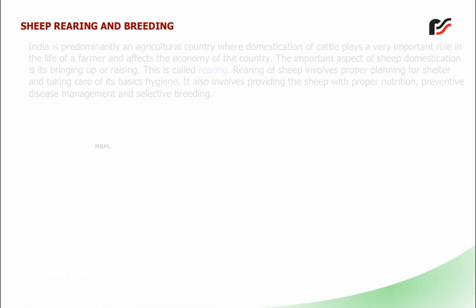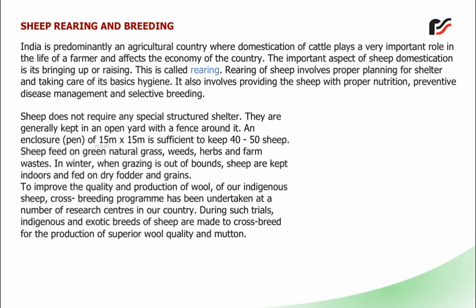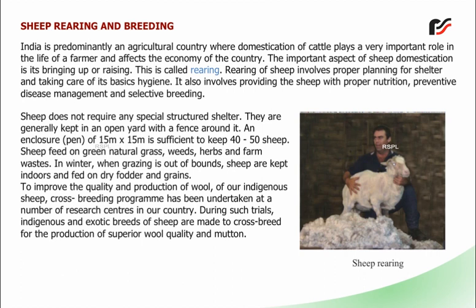India is predominantly an agricultural country where domestication of cattle plays a very important role in the life of a farmer and affects the economy of the country. The important aspect of sheep domestication is its bringing up or raising, which is called rearing. Rearing of sheep involves proper planning for shelter and taking care of its basic hygiene. It also involves providing the sheep with proper nutrition, preventive disease management and selective breeding. Sheep do not require any special structured shelter and are generally kept in an open yard with a fence around it. An enclosure pen of 15m x 15m is sufficient to keep 40-50 sheep. Sheep feed on green natural grass, weeds, herbs and farm waste. In winter, when grazing is out of bounds, sheep are kept indoors and fed on dry fodder and grains.